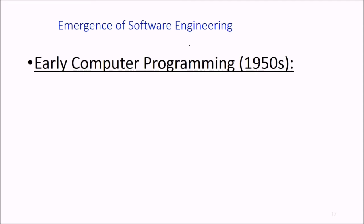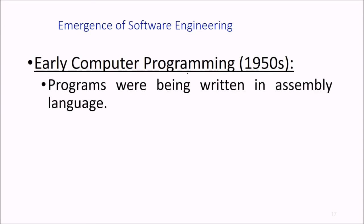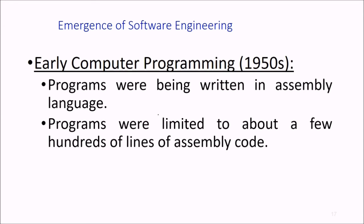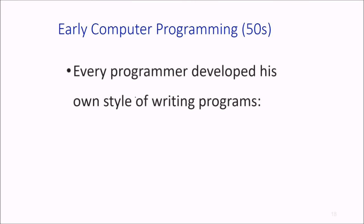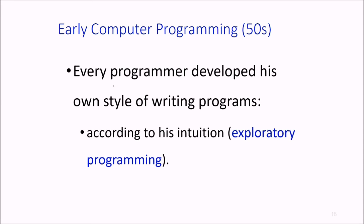How did this happen? In early computer programming in the 1950s, programs were written in assembly language and limited to a few hundred lines of code. Every programmer developed his own style of writing programs according to his intuition, which we call exploratory programming. There are things wrong with exploratory style of software development.